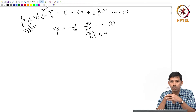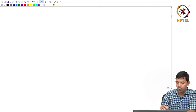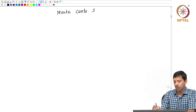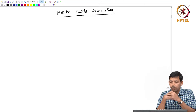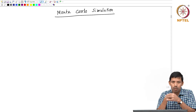There is another computer simulation method which is called Monte Carlo simulation. This is another simulation technique which is quite popular, and this simulation method is also very useful to generate the different microstructures of your system.